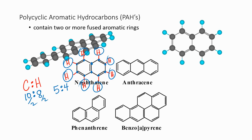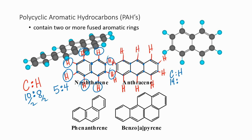For anthracene, we can check the ratio as well. It has 14 carbons and 10 hydrogens, giving a simplified ratio of 7:5. Again, the points of ring fusion don't have hydrogens. Phenanthrene should give the same results as anthracene since it also has three fused rings.